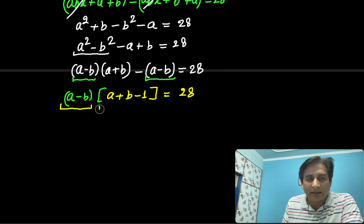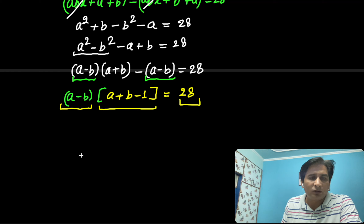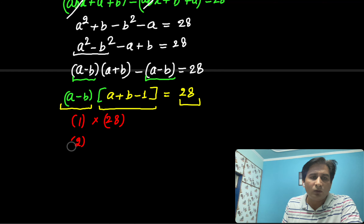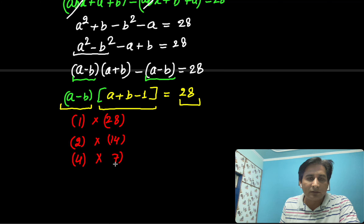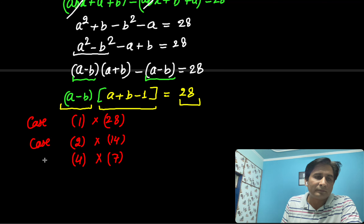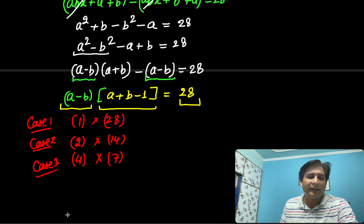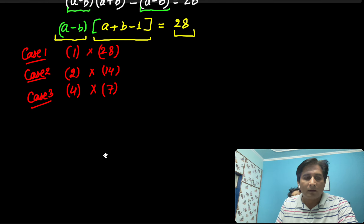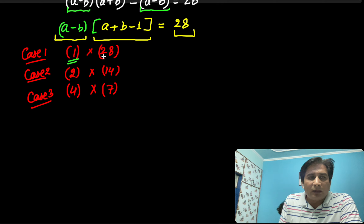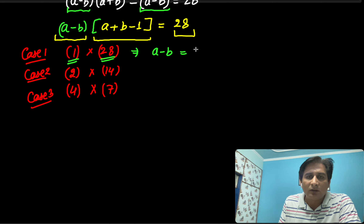Now we have two factors whose product is 28. The possibilities are: the first factor is 1 and the second is 28; or the first is 2 and the second is 14; or the first is 4 and the second is 7. So there are 3 possibilities. In possibility 1, A minus B equals 1.